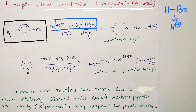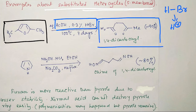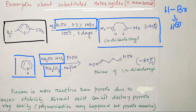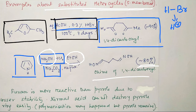For 2,5-dimethylfuran under these dilute acid conditions, a 1,4-dicarbonyl compound is ultimately obtained. In the case of pyrrole, hydroxylamine hydrochloride and sodium carbonate are needed: the hydrochloride salt is neutralized by sodium carbonate to liberate free hydroxylamine as nucleophile, and the reaction is carried out in ethanol. The product is an oxime of a 1,4-dicarbonyl compound. Furan is more reactive — relatively less drastic conditions are sufficient — due to its lesser stability, i.e., lesser aromaticity.